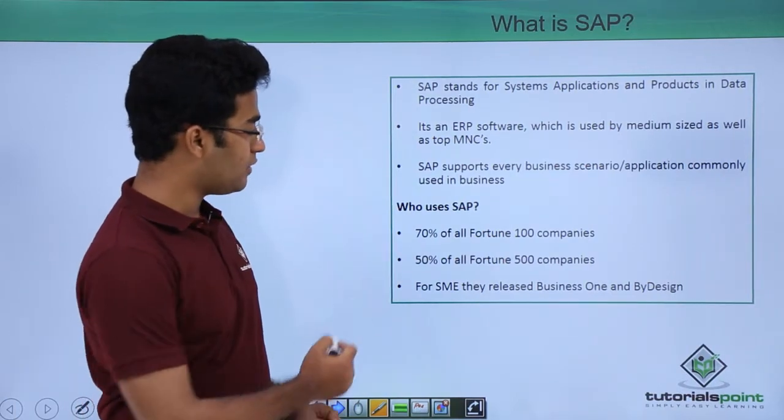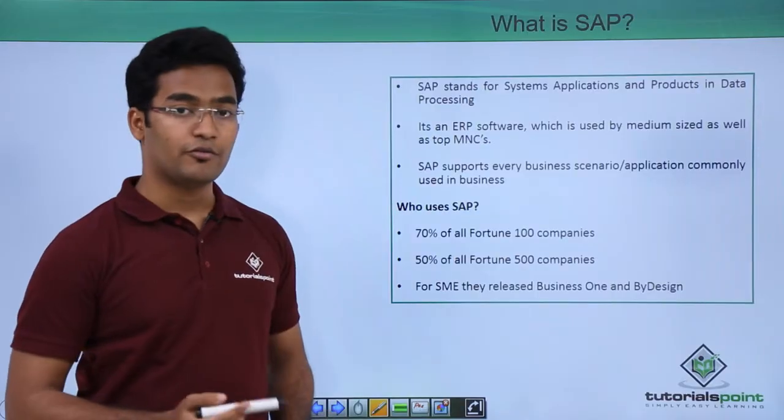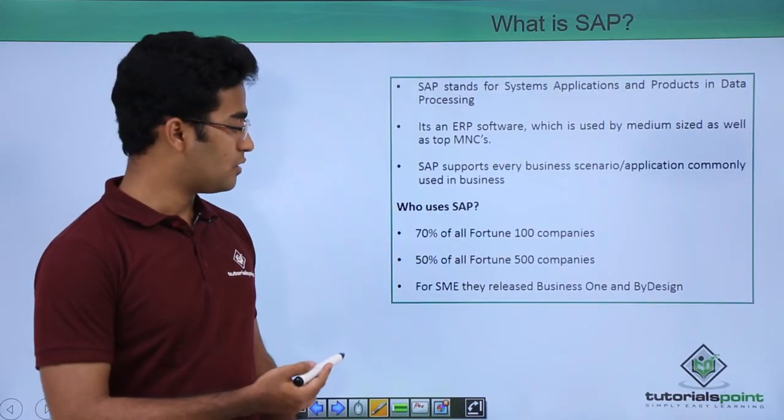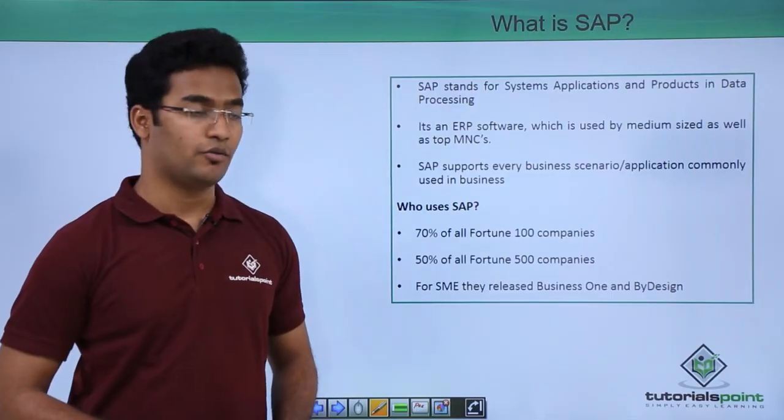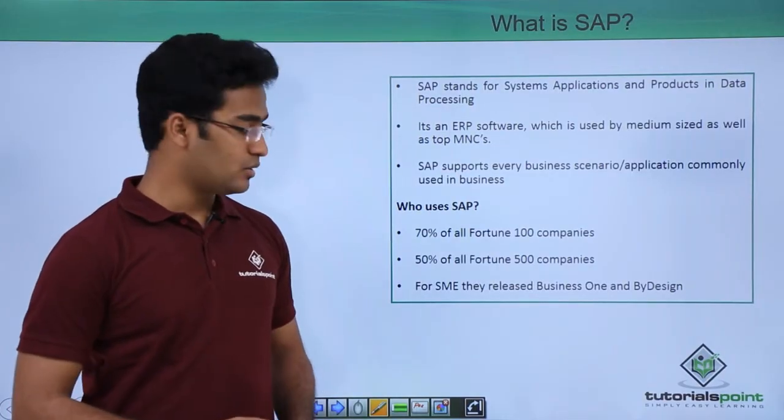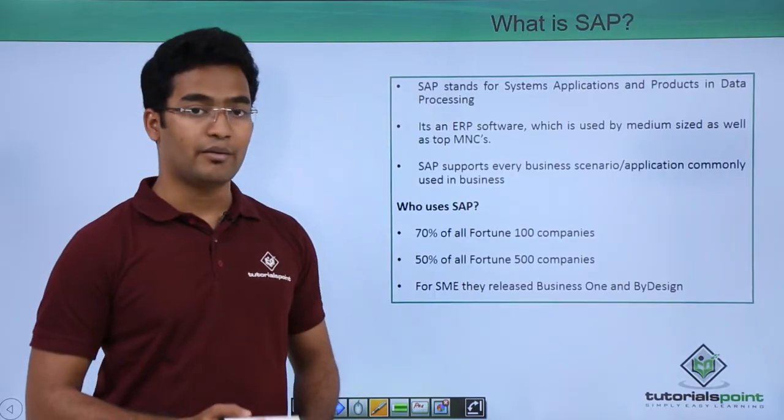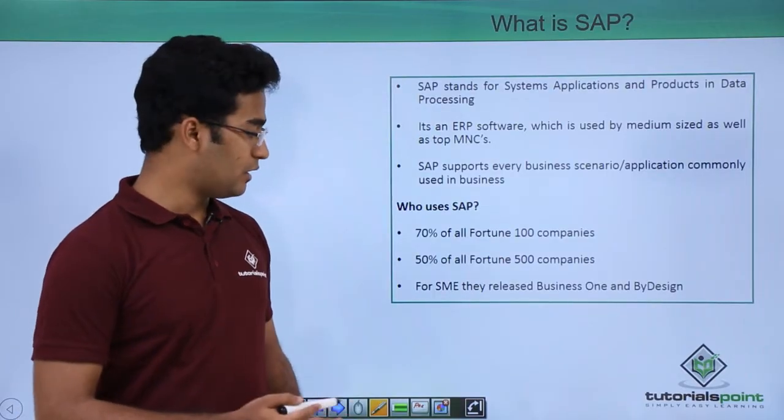Here I have listed some facts. 70% of all the Fortune 100 companies are using SAP. 50% of Fortune 500 companies are also using SAP. For small scale industries they have released Business One and ByDesign software so they can use it as well.